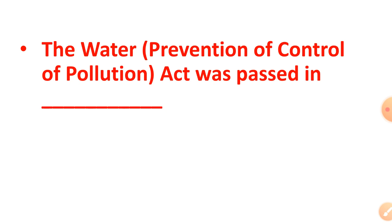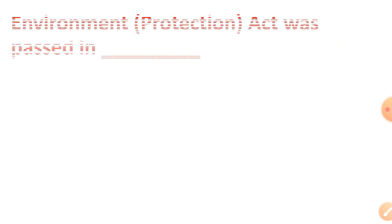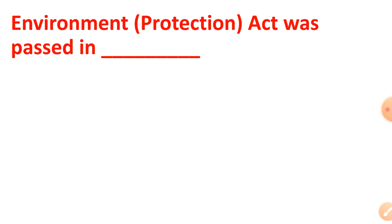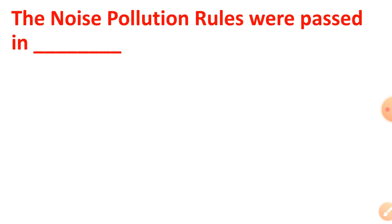Question number 1: The Water Act was passed in the year — the answer is 1974. The Environment Act was passed in the year — the answer is 1986. The Noise Pollution Rules were passed in the year — the answer is 2000.